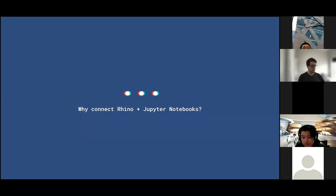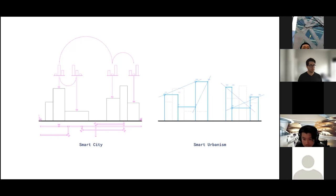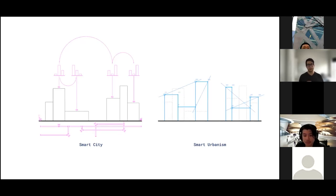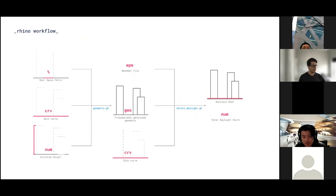Ultimately, what we've found is that we're hearing buzzwords around smart city and smart urbanism. For us, that comes down to doing analytics on a larger scale than just our building. Architects are now asked to think about not just what the building impacts are for the occupants, but also what that means for the larger site and city context. In this workshop, we'll be taking an open space ratio as a float, a site curve, a building height, procedurally generating geometry, and doing daylight analysis — all within a Jupyter Notebook using Rhino Compute.